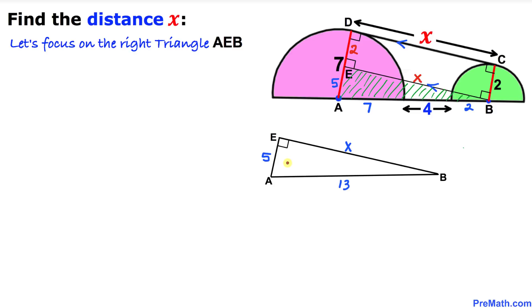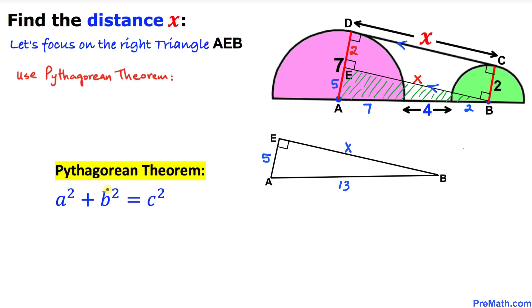And since this triangle AEB is a right triangle, therefore we are going to use the Pythagorean theorem. And here is the Pythagorean theorem: a squared plus b squared equal to c squared. In our case, this side EB I am going to call a. This side AE I am going to call b. And this longest leg, this hypotenuse, I am going to call c.